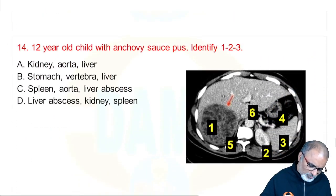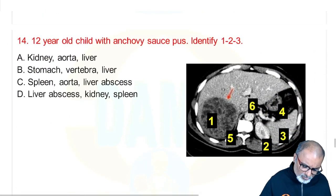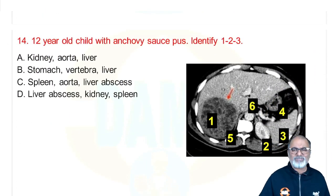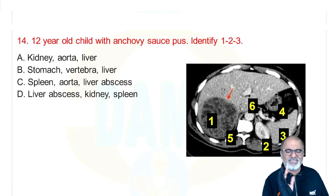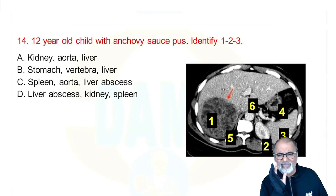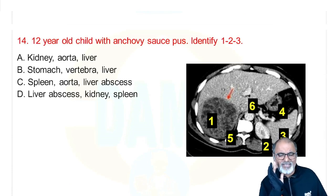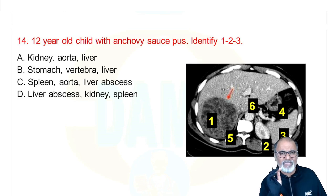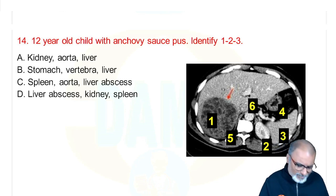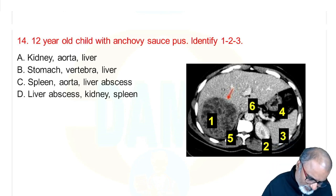A 12-year-old child with anchovy sauce pus — this is amoebic liver abscess. Anchovy sauce or chocolate-colored pus is caused by Entamoeba histolytica.